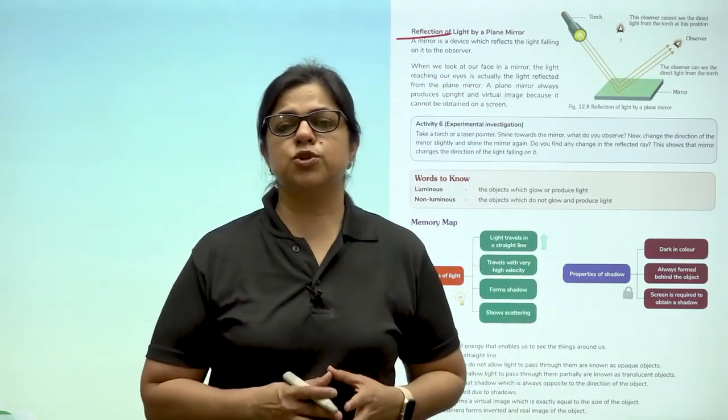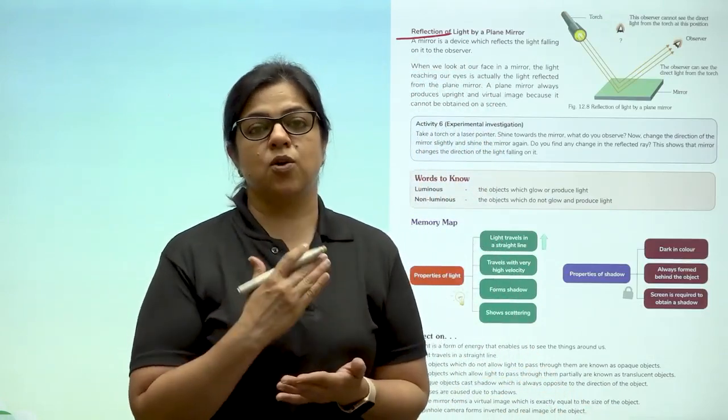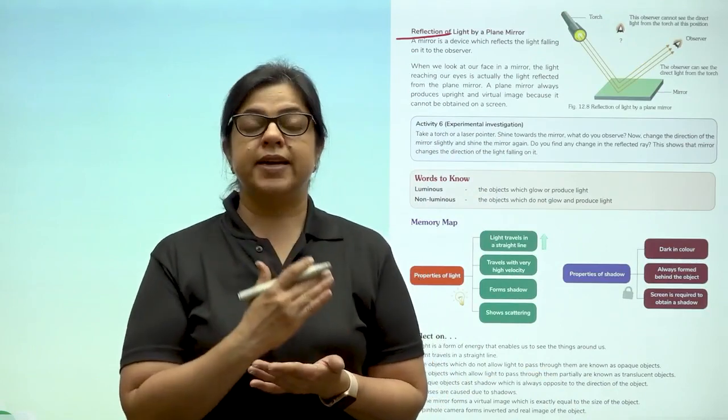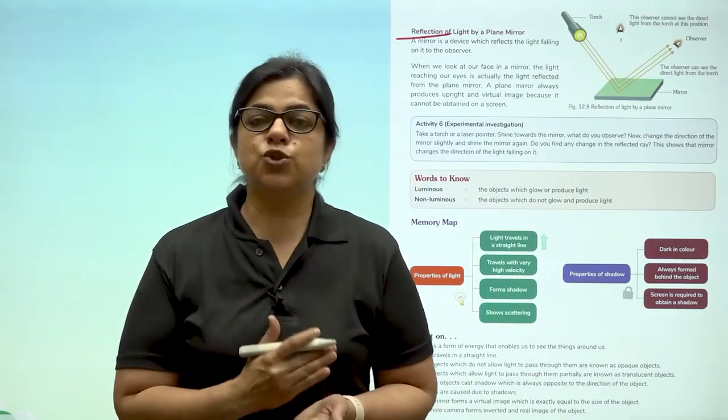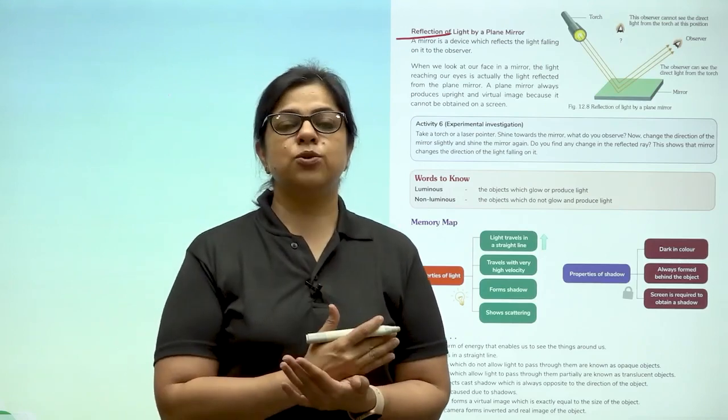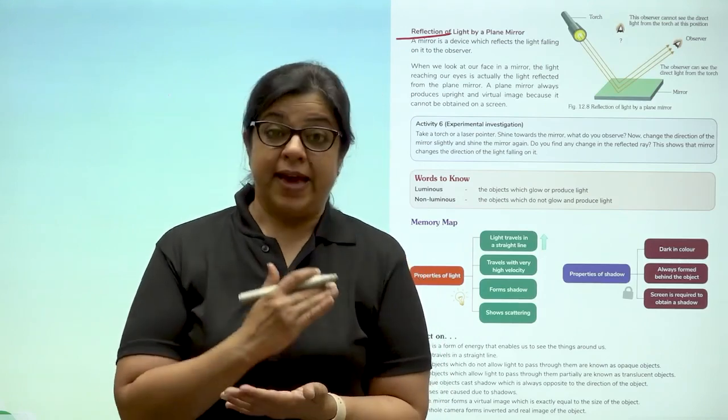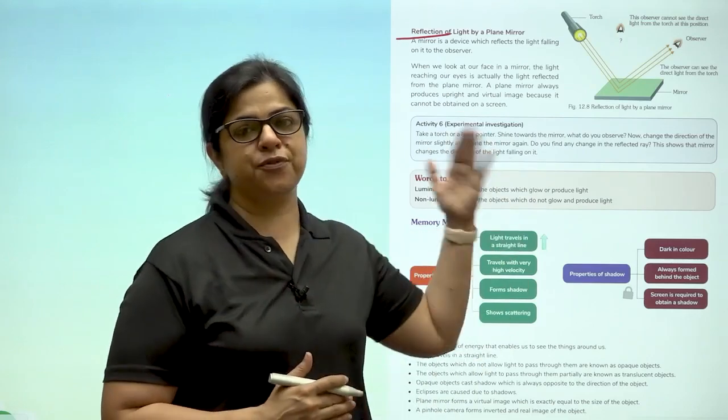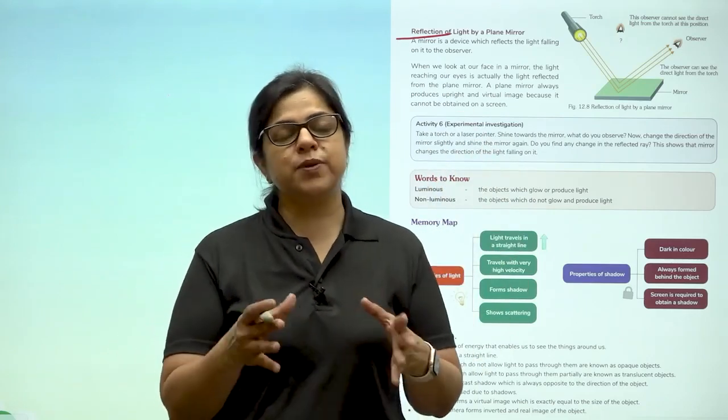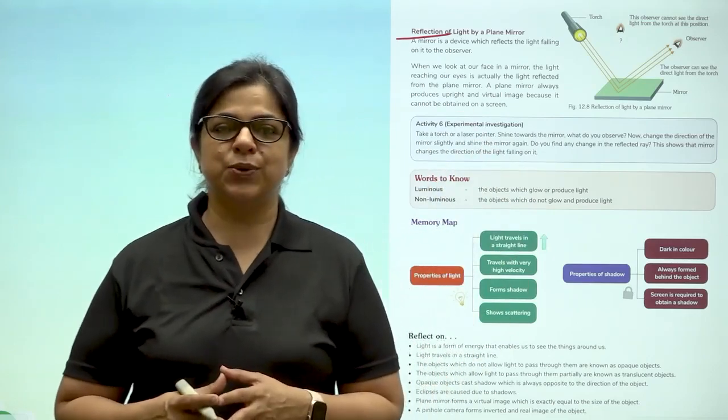So children, I hope you have thoroughly understood the concept of light, the concept of objects that are opaque, transparent and translucent, the various sources of light, shadows, how shadows are formed, eclipses, the two kinds of eclipses and also reflections. So time for you to attempt the questions at the back. Thank you.